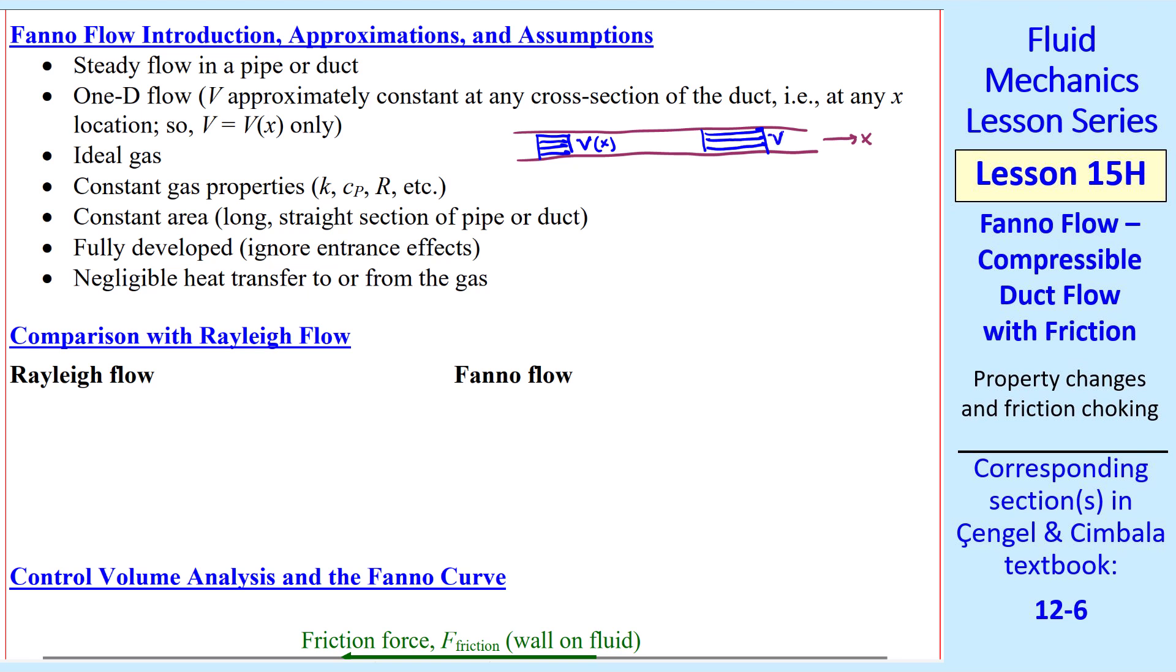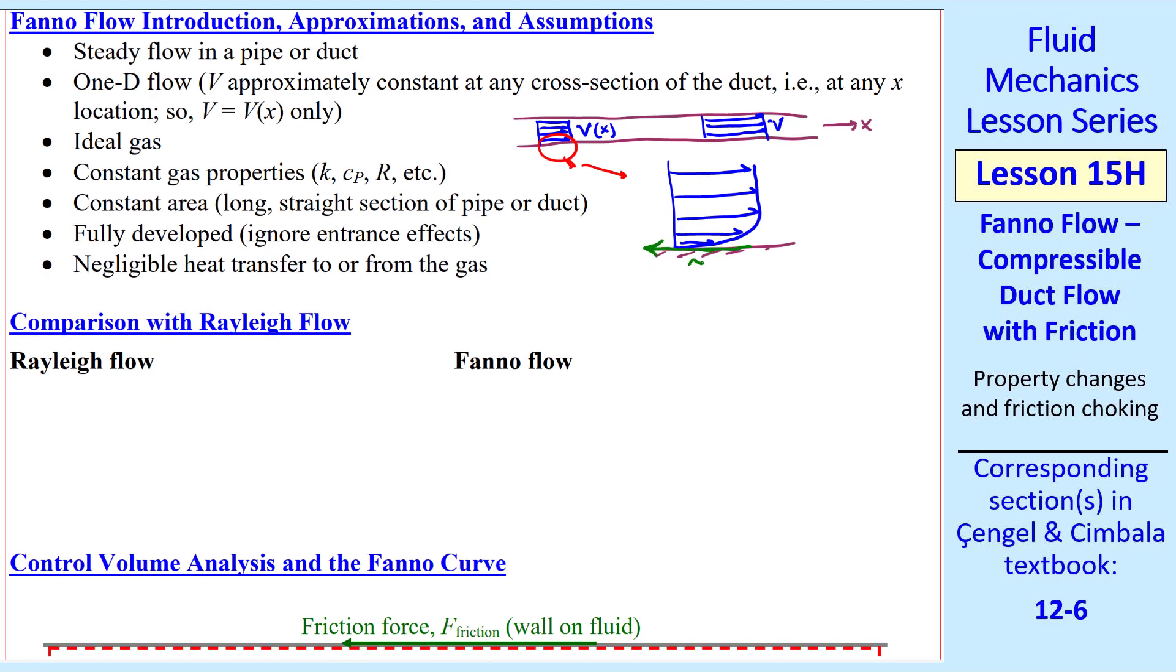This 1D approximation ignores boundary layers, but we know that if we magnify this section, these are typically high Reynolds number flows that are turbulent and the boundary layer is thin. But since we're dealing with friction, we know that the wall must supply a shear stress tau w acting on the fluid by the wall. We also assume ideal gas, constant gas properties, constant area, fully developed—in other words, ignore any entrance effects. These will be very long pipes or ducts. And we assume negligible heat transfer, in other words, adiabatic flow.